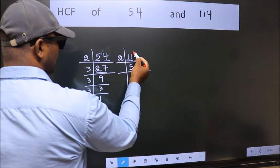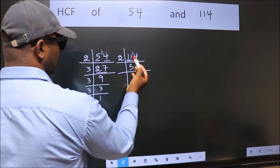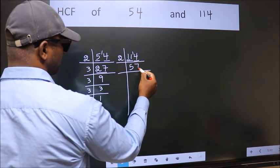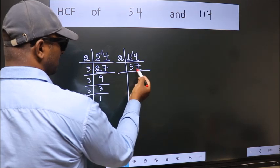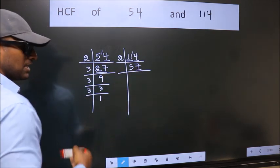11 minus 10 is 1, 1 carried forward 14. When do we get 14 in the 2 table? 2 times 7 equals 14. Last digit 7, not even. So, this number is not divisible by 2.